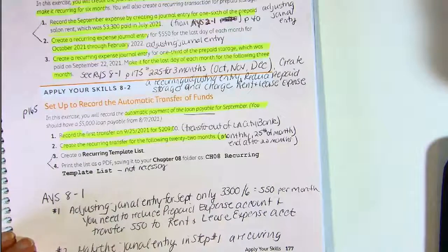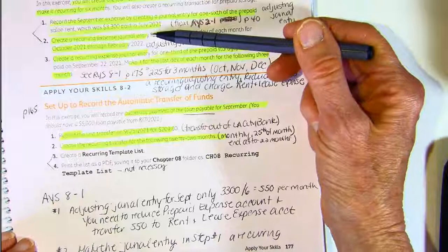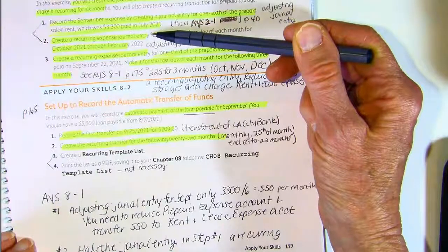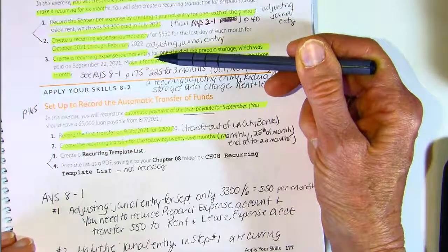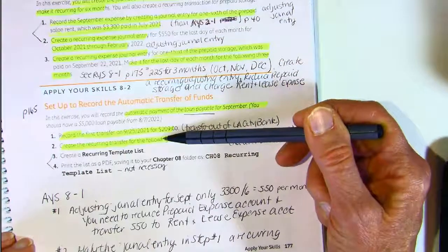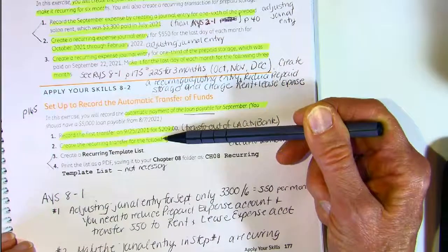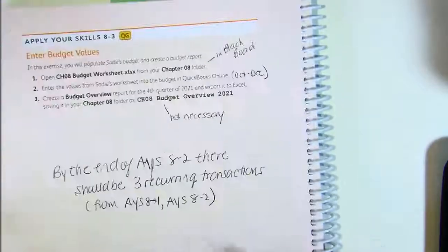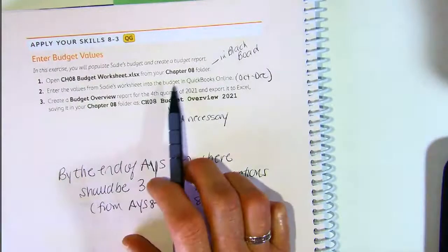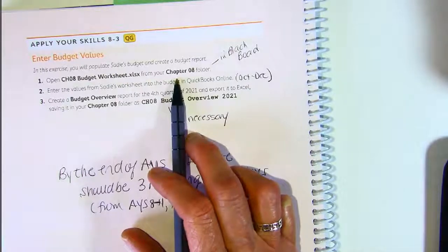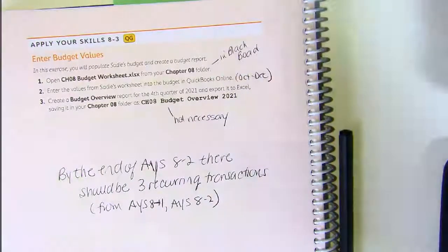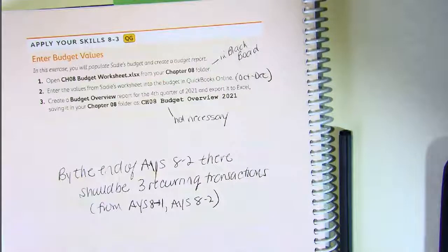In all, you have three recurring transactions: the one you create in Apply Your Skills 8-1 Step 2, the one in Apply Your Skills 8-1 Step 3, and the one in Apply Your Skills 8-2 Step 2. The last thing you'll do is Apply Your Skills 8-3, where you upload the budget worksheet — it's in Excel and you'll find it in the Chapter 8 folder in Blackboard. Feel free to email me if you have any questions, or join one of our Zoom office hours. Have a great day!